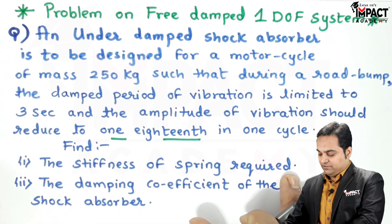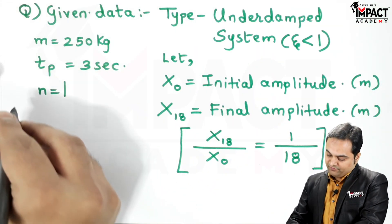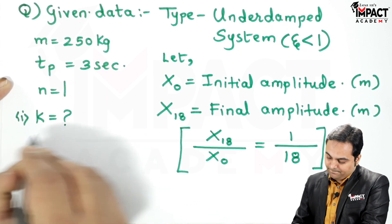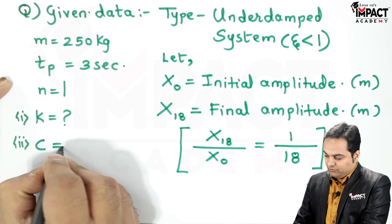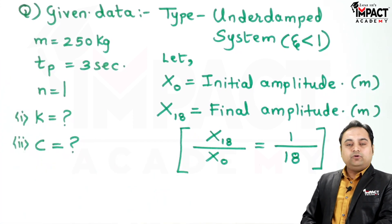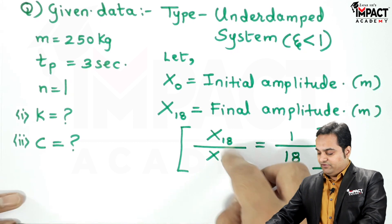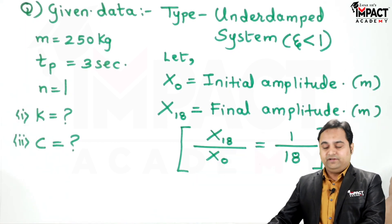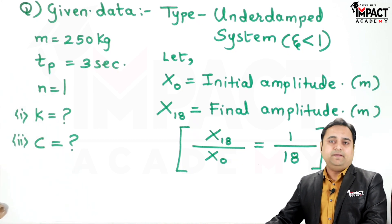We need to find the stiffness of the spring required, denoted by k, and the damping coefficient of the shock absorber, denoted by c. We start the solution by using the amplitude ratio to find the logarithmic decrement, which is used in the underdamped system.